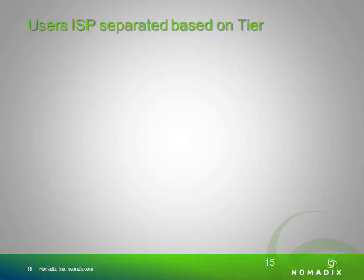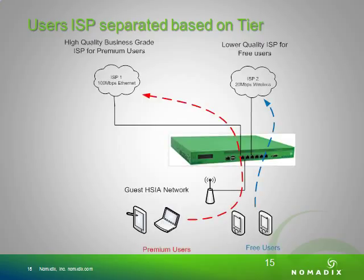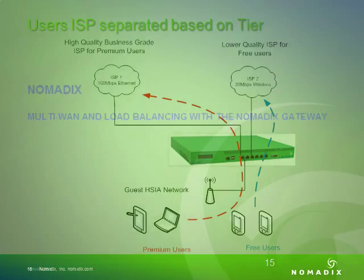You can also separate users based on their tier to different ISP or WAN interfaces utilizing the Radius VSA discussed earlier. You can have free users go to a slower ISP connection, whereas your premium users get access to a larger bandwidth ISP utilizing that Radius VSA.